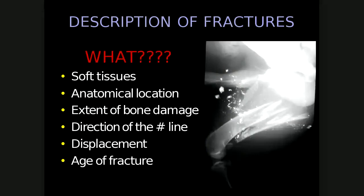When describing a fracture, we must do so in detail as if telling someone over the telephone who doesn't have the image in front of them. We need to describe the soft tissue changes — for example, is there gas, foreign bodies, or soft tissue swelling — the anatomical location of the fracture, the extent of bone damage, the direction of the fracture line, the displacement of the fracture, and whether the fracture is acute or chronic.